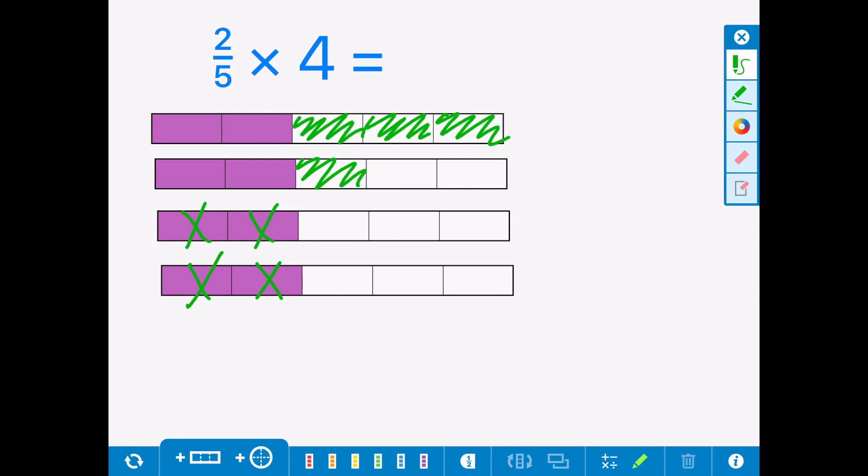We can see that gives us 1 whole and 3/5, or alternatively gives us 1, 2, 3, 4, 5, 6, 7, 8—that's 8/5.